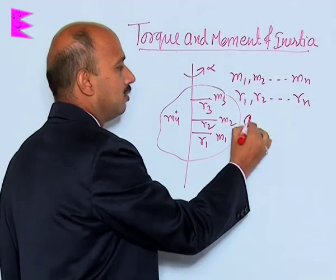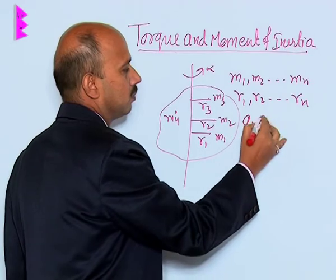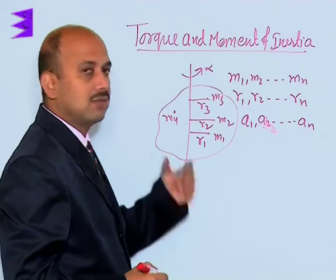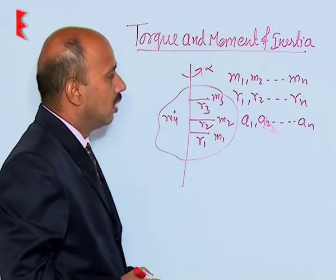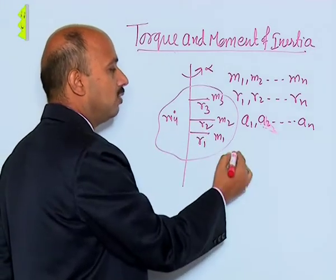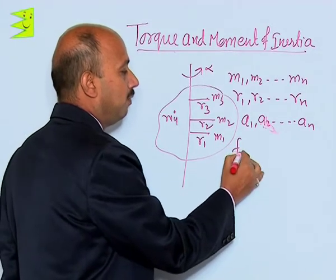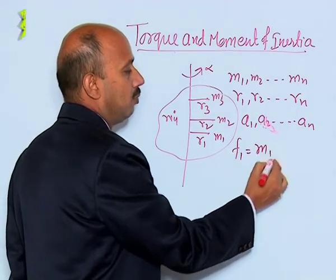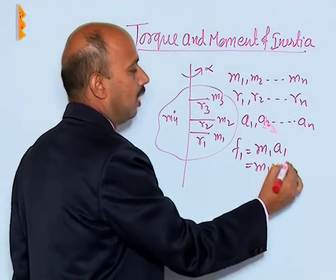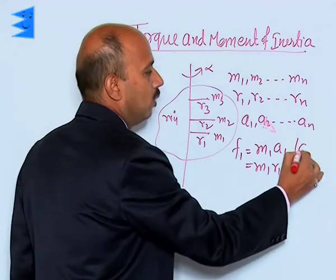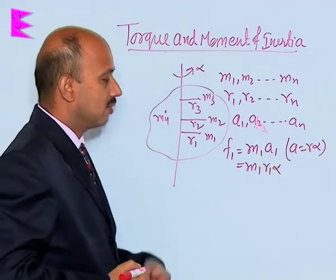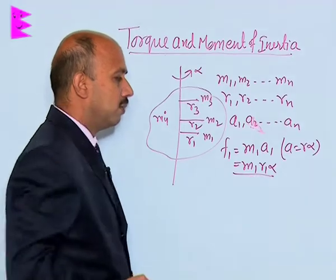Every particle has linear acceleration a1, a2, and an. Alpha is the angular acceleration which remains constant. A force is acting on every particle. F1 is equal to m1·a1, which can be written as m1·r1·alpha, because linear acceleration a is equal to r·alpha.